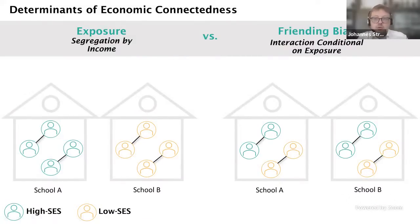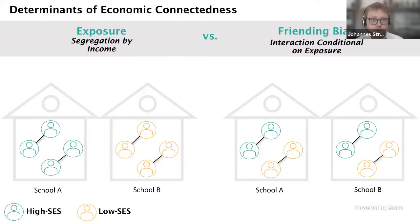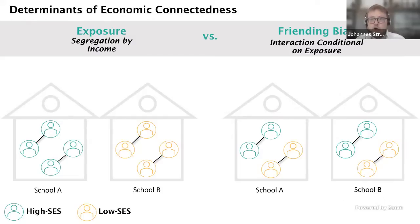In the next part of the paper, we explore why some areas have higher economic connectedness than others. We conceptually separate this into two explanations. The first is exposure — or income segregation — best understood in the context of schools. If one school has only high-SES children and another has only low-income children, that separation by income means low and high-SES individuals move in different social settings and go to different schools, colleges, and religious organizations.